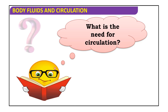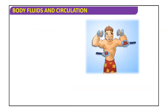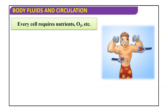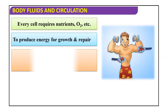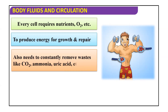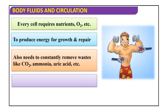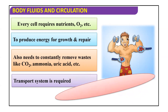Why do we need circulation? There are many reasons. The main one is that we need oxygen and nutrients. Our blood carries oxygen and nutrients to the cells and carries back the waste products to be excreted. Every cell requires nutrients and oxygen to produce energy for growth and repair. The body also needs to constantly remove waste like CO2, ammonia, and uric acid.